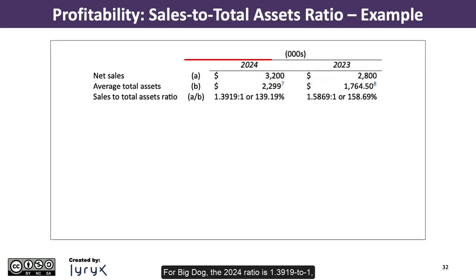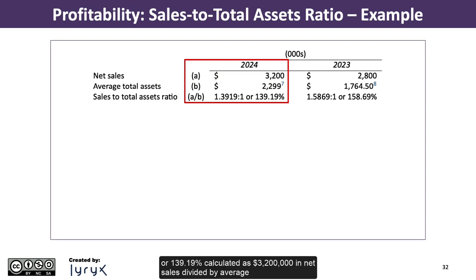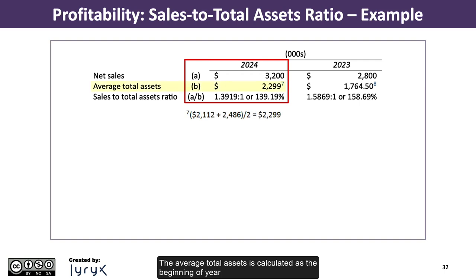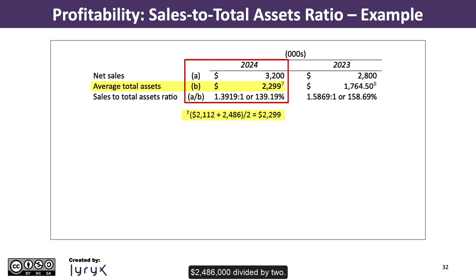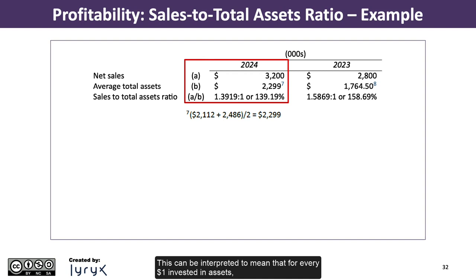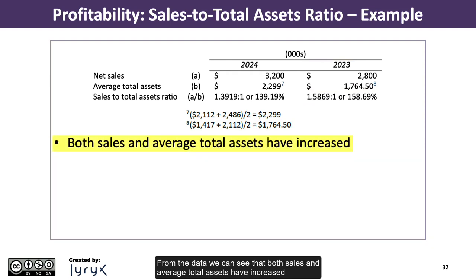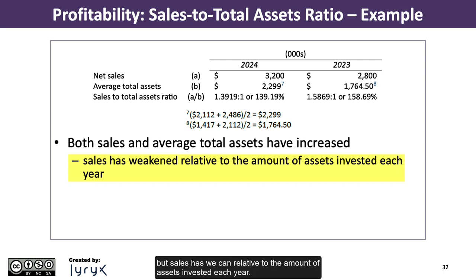For Big Dog, the 2024 ratio is 1.3919 to 1, or 139.19%, calculated as $3,200,000 in net sales divided by average total assets of $2,299,000. The average total assets is calculated as beginning-of-year total assets of $2,112,000 plus ending total assets of $2,486,000 divided by 2. This can be interpreted to mean that for every $1 invested in assets, the company generates $1.39 in net sales. The 2023 ratio is 1.5869 to 1, or 158.69%. Both sales and average total assets have increased, but sales has weakened relative to the amount of assets invested each year.